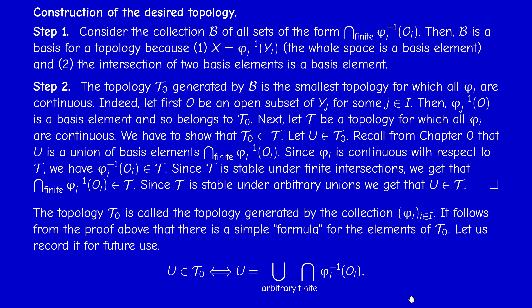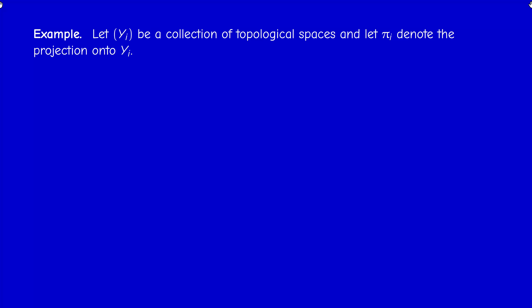There's an analogy with a vector space generated by a set: the vector space generated by a set is the set of all elements that are linear combinations of elements of that set. Here, instead of intersection we have multiplication, and instead of union we have summation. We already encountered a similar situation when we dealt with the product topology in proposition 0.9, which states that the product topology is the smallest topology on the product making all projections continuous.